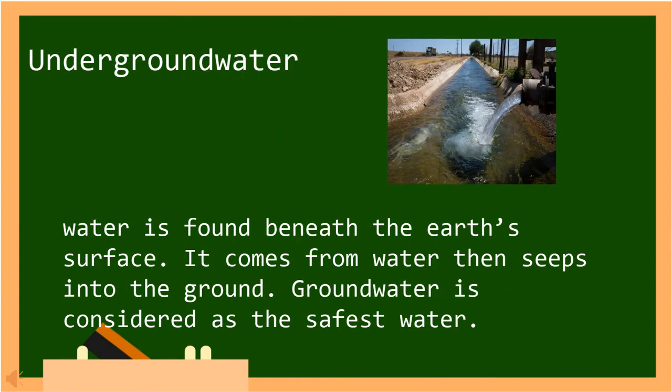Let's have the last one: underground water. Underground water is found beneath the earth's surface. It comes from water that seeps into the ground. Ground water is considered as the safest water. Springs are openings of ground water.